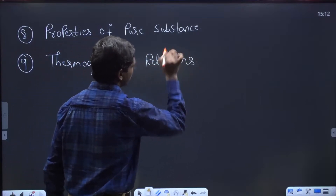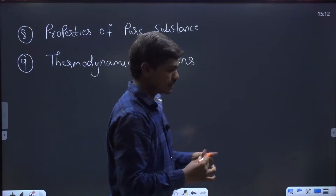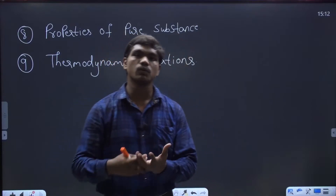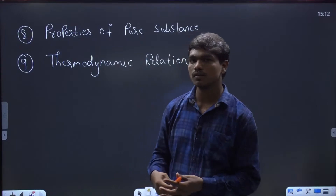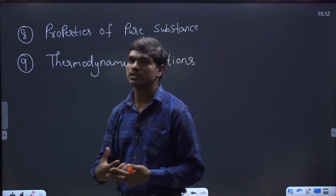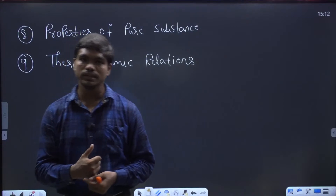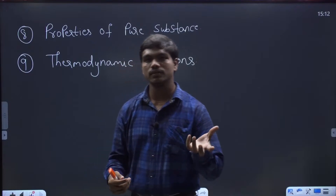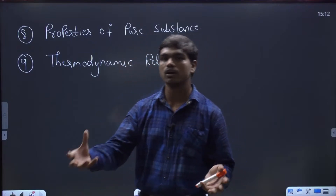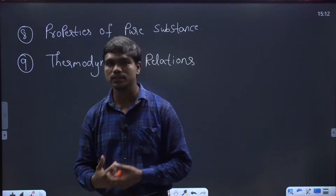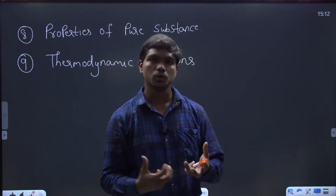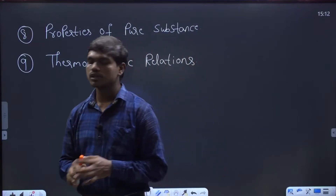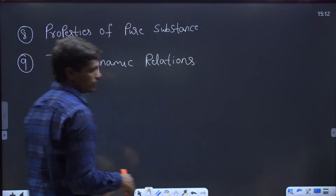Finally, before the course gets finished, we'll go for one important chapter called thermodynamic relations. This chapter gives a basic ideology in finding different unmeasurable quantities like entropy, for which there are no physical devices to measure. This chapter plays a good role in establishing connections between properties you can measure directly from the systems and properties that you cannot measure directly, providing formulations to calculate unmeasurable properties with the help of measurable ones. This broadly classifies the course into nine chapters.